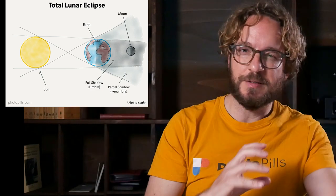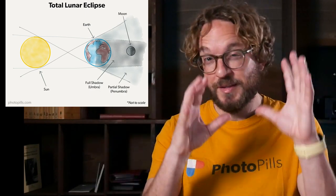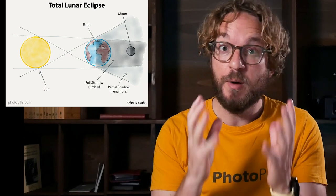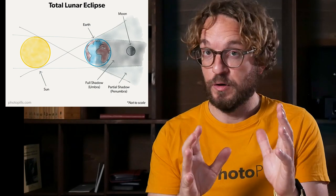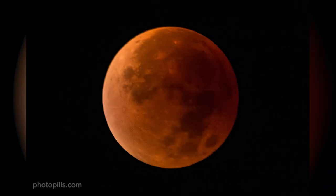The Earth will move between the Sun and the Moon, covering the Sun's rays and casting its strong shadow, also called the Umbra, over the whole full Moon. Depending on the atmospheric conditions, the Moon can take different shades of red, orange, brown, and even yellow. In many Total Lunar Eclipses, the Moon becomes red — that's the reason it's popularly known as the Blood Moon. On top of that, the Total Lunar Eclipse will happen during the Super Moon, so the Moon will appear a bit larger than usual. How cool is that?